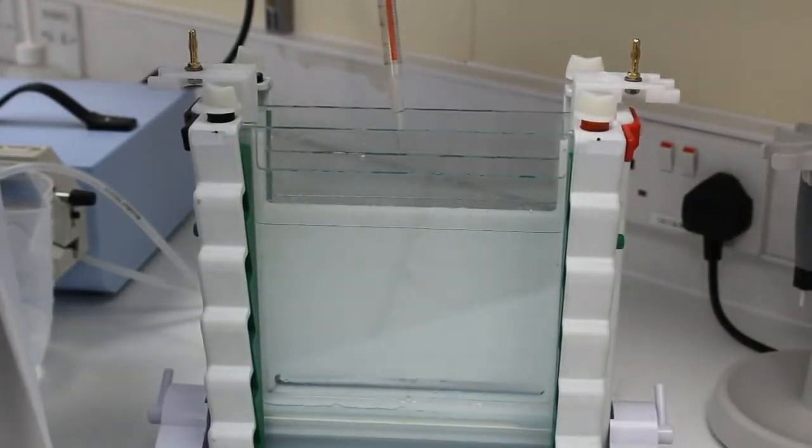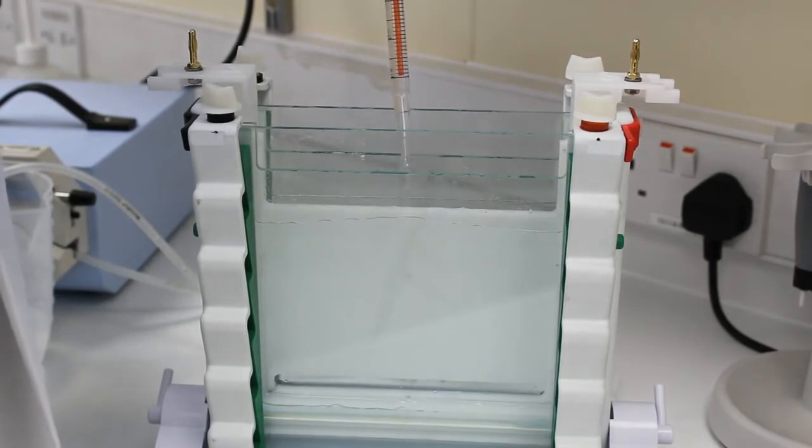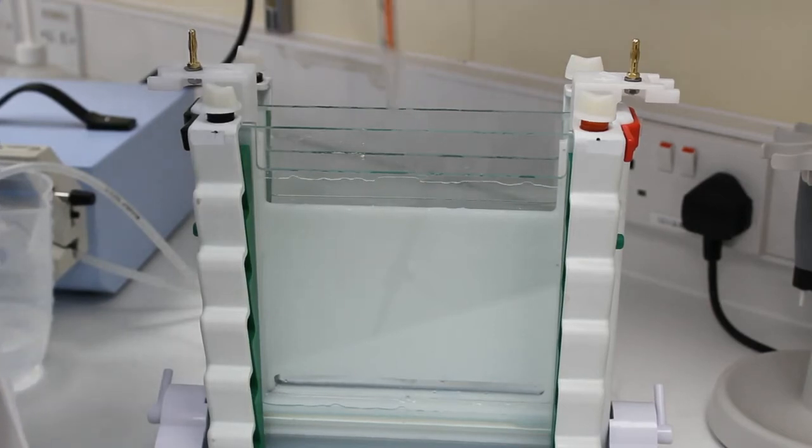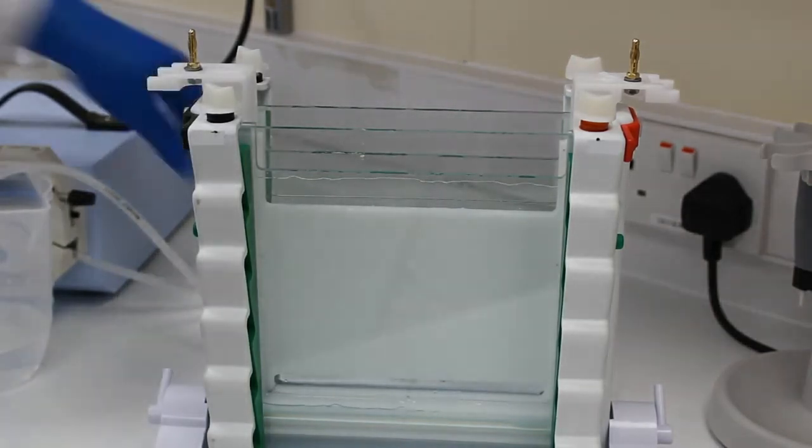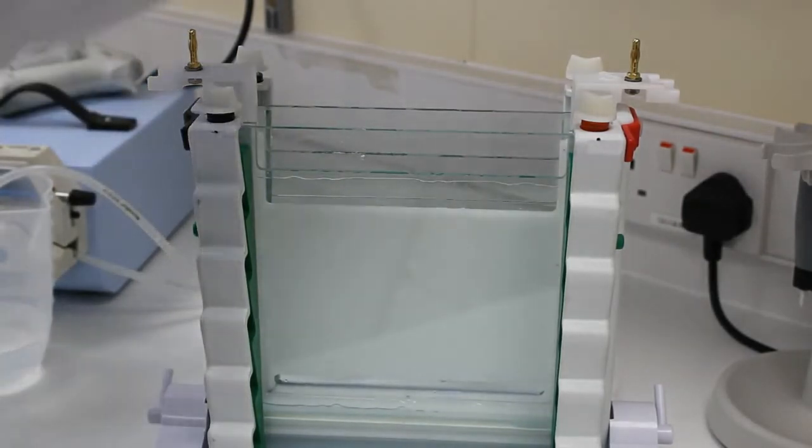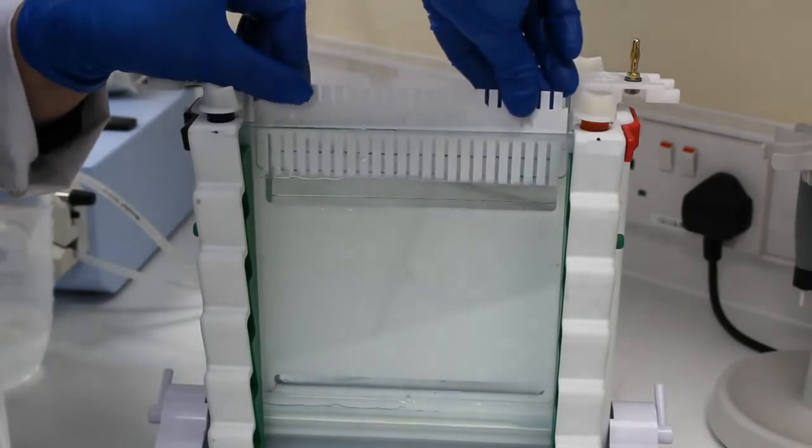So for this particular gel we've also made a stacking gel that we're adding on top of our gradient gel. And that's where we're going to insert our combs in. So that stacking gel is a 0% denaturing gel, otherwise it's essentially the same as the rest of the gel.